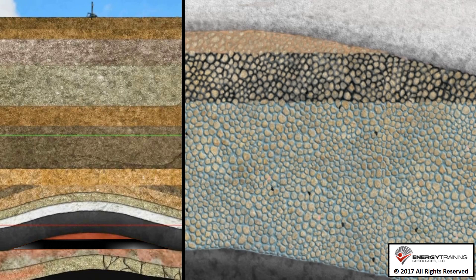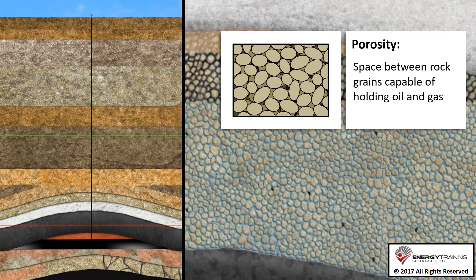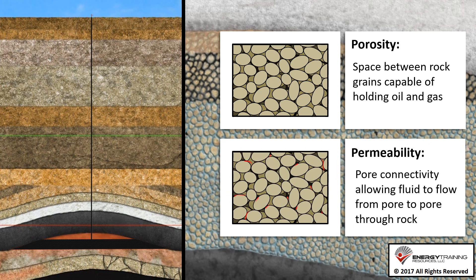A conventional trap can usually be developed with vertical wells because it contains a concentrated accumulation of oil and gas — a much higher concentration than in the source rock. The rock is porous, meaning that it can hold a lot of oil and gas, and the rock is permeable, meaning that oil and gas can flow through the rock into wellbores.